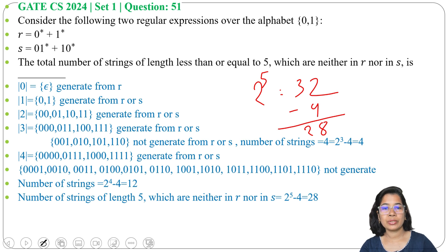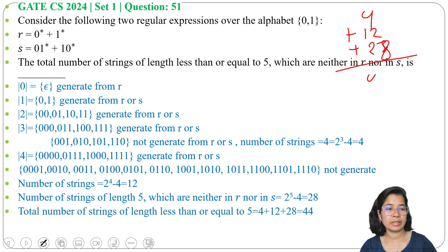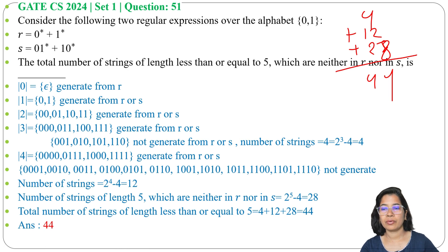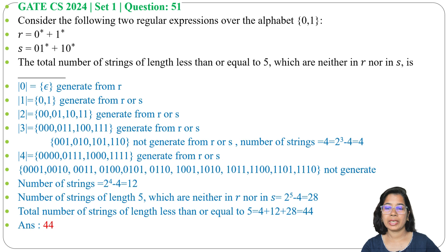So the total number of strings of length less than or equal to 5 which cannot be generated from R and S is: 4 plus 12 plus 28, which equals 44. So 44 strings total cannot be generated from R and S. The answer is 44. Lengths 0, 1, and 2 — all strings can be generated from R and S, whereas for lengths 3, 4, and 5, some strings cannot be generated from R and S, and those are what we count.